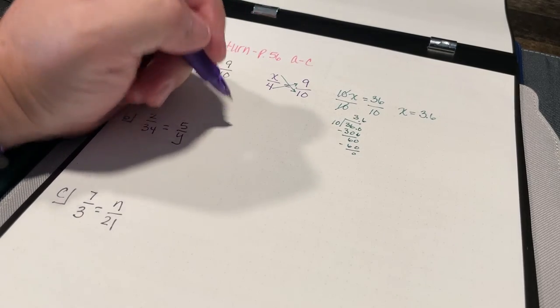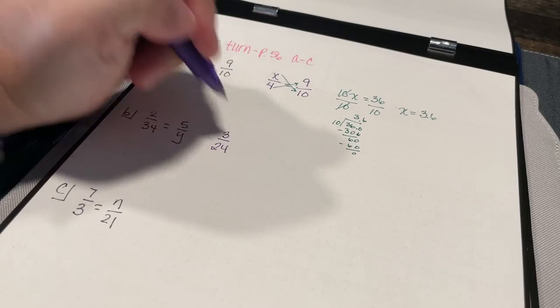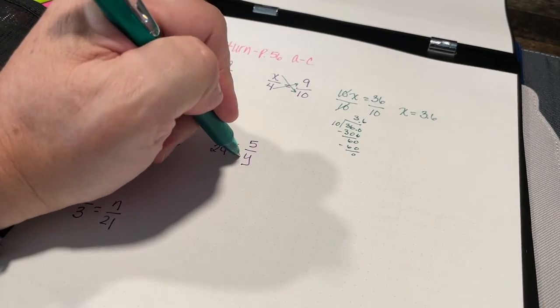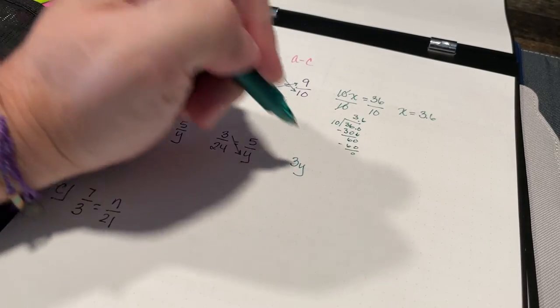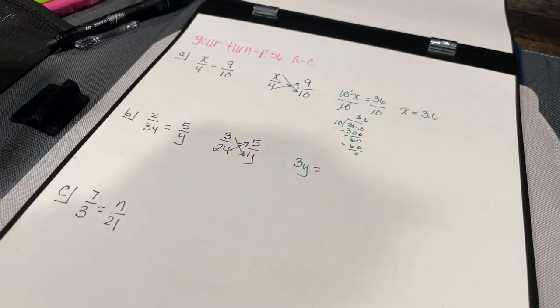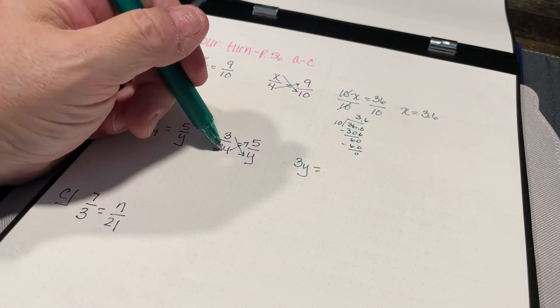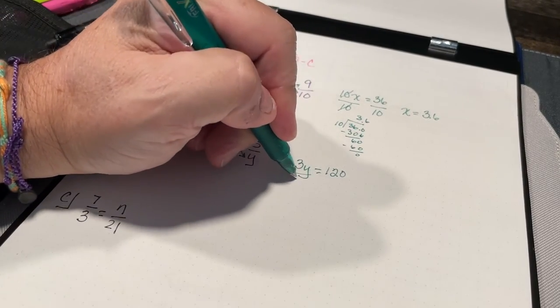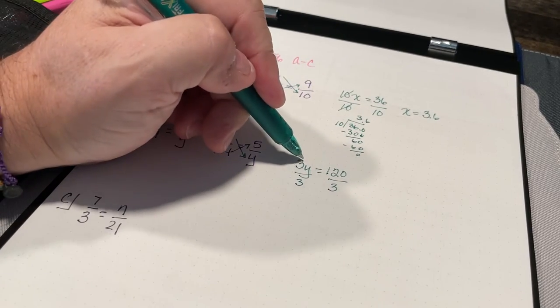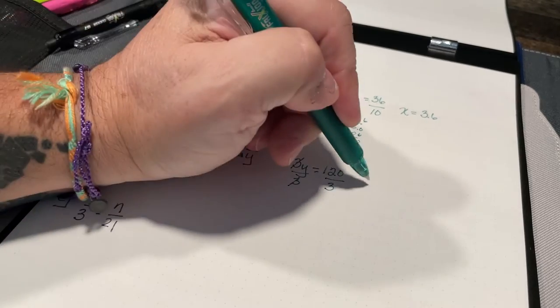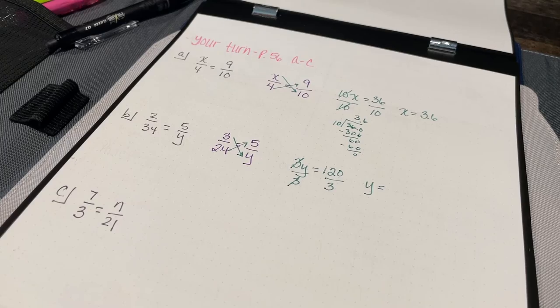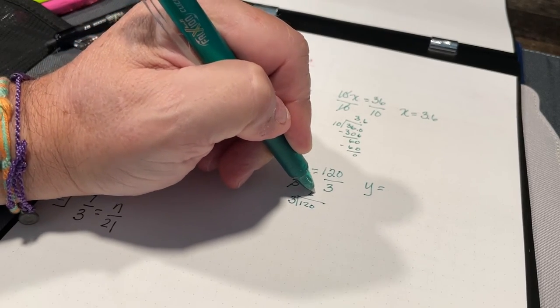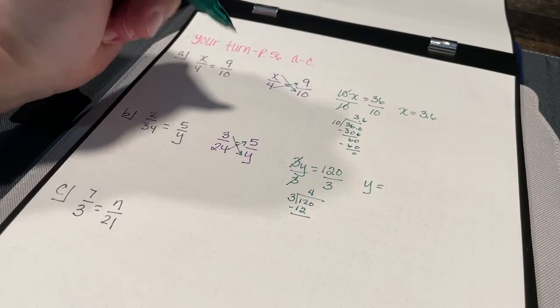Let's look at b. Once again, I'm going to rewrite it: 3 over 24 equals 5 over y. Cross products. 3 times y, that's just going to be 3y. That's going to equal 24 times 5. Well, 20 times 5 is 100, plus 4 times 5 is 20, so that should be 120. Then I'm going to divide both sides by 3. This is going to just give me 3y divided by 3, I'm just going to end up with y. I want to find out how many times 3 goes into 120. 3 goes into 12 four times. 4 times 3 is 12. 12 minus 12 is 0.